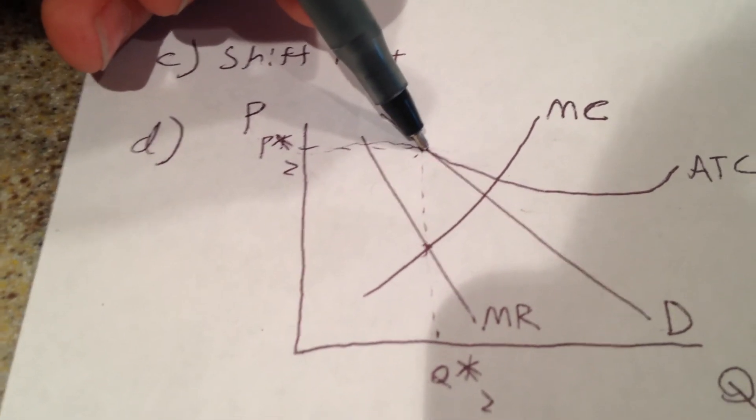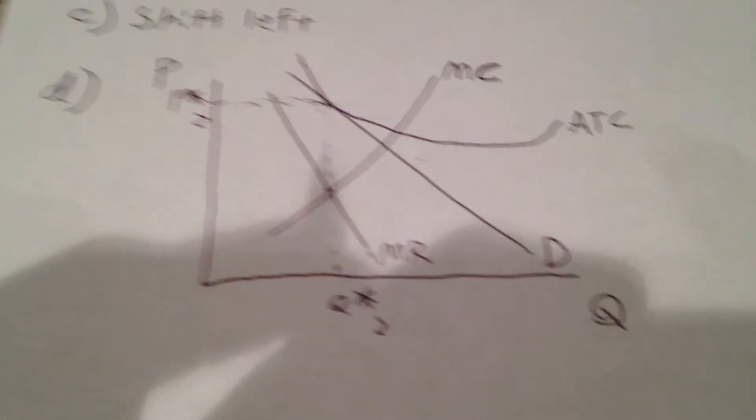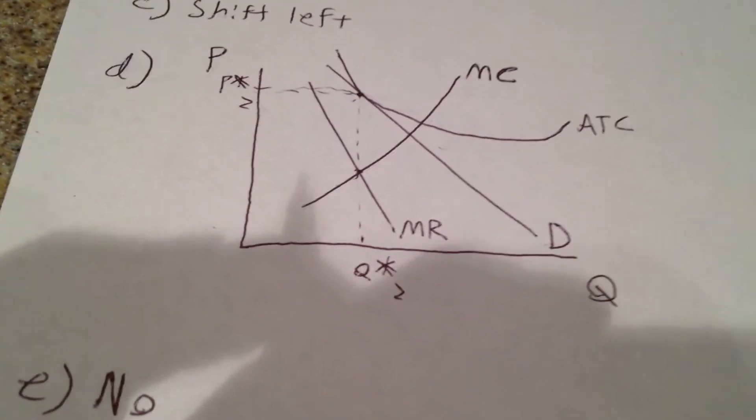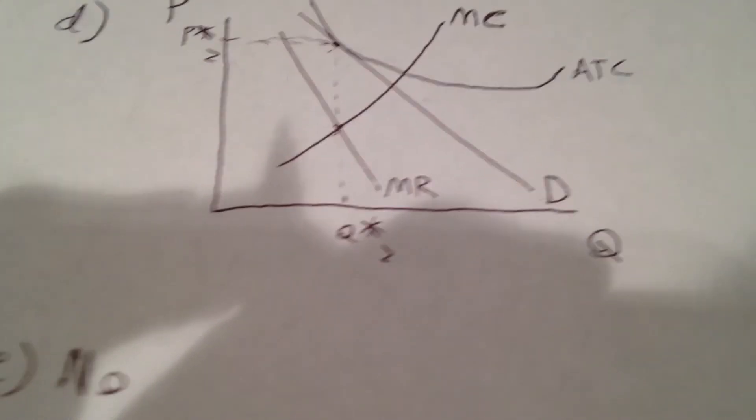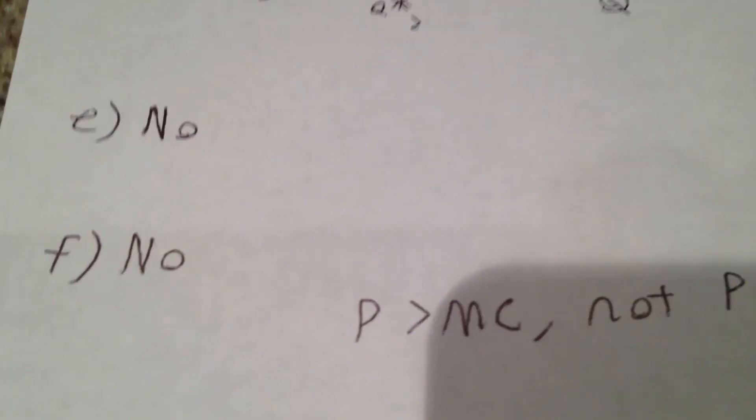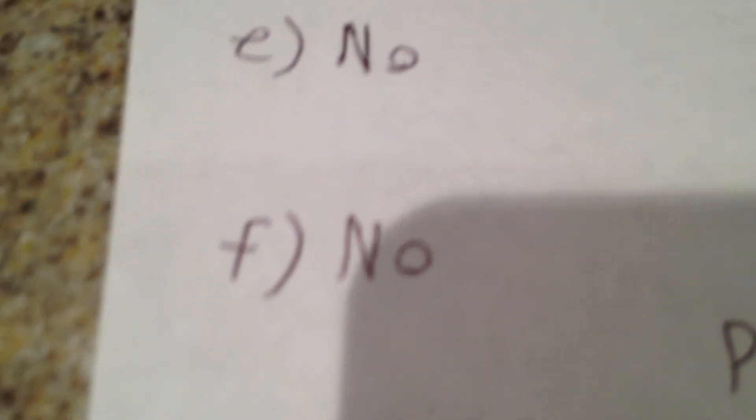They produce less than what society wants or what they call the socially optimal output. So in this case, the price is greater than MC, marginal cost, which shows us that there is not productive efficiency.